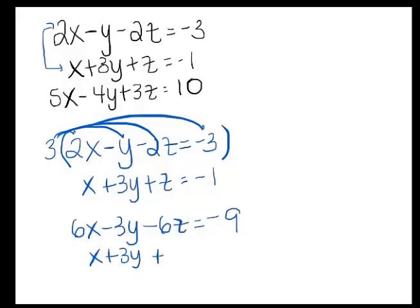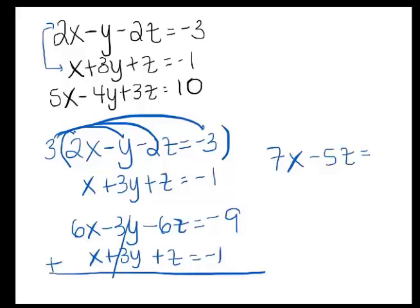Okay, and I'll rewrite the bottom one. So now, what happens when I add these equations together? Those y's cancel and I'm left with 7x minus 5z equals negative 10. Okay, so I'm going to save this because I'm going to use it again.